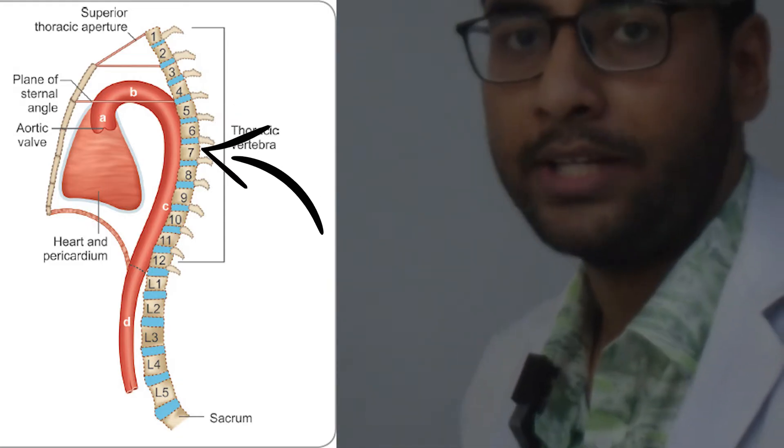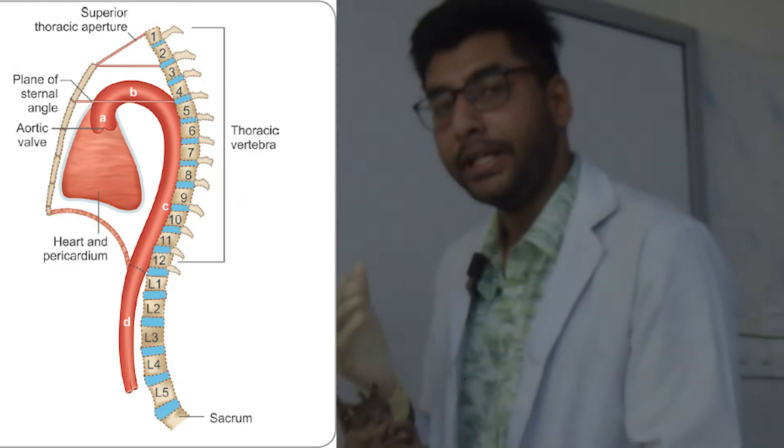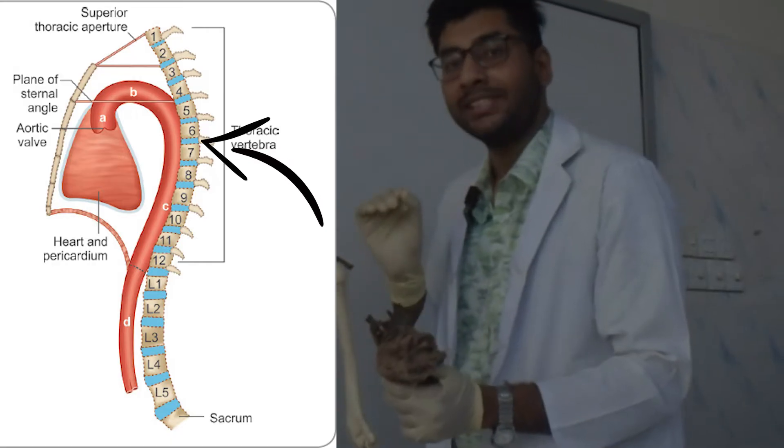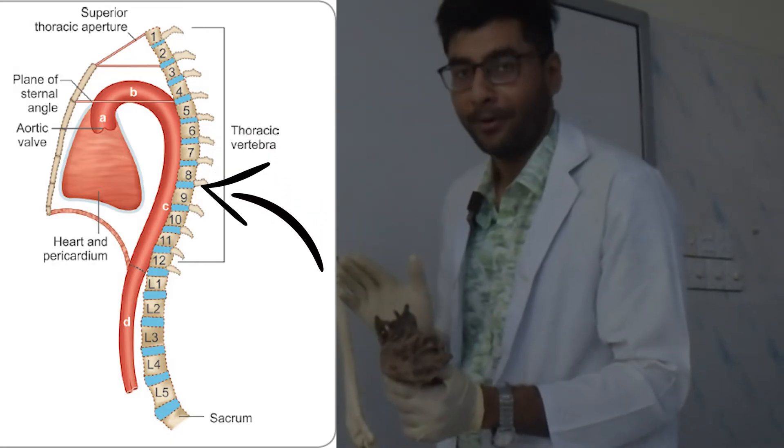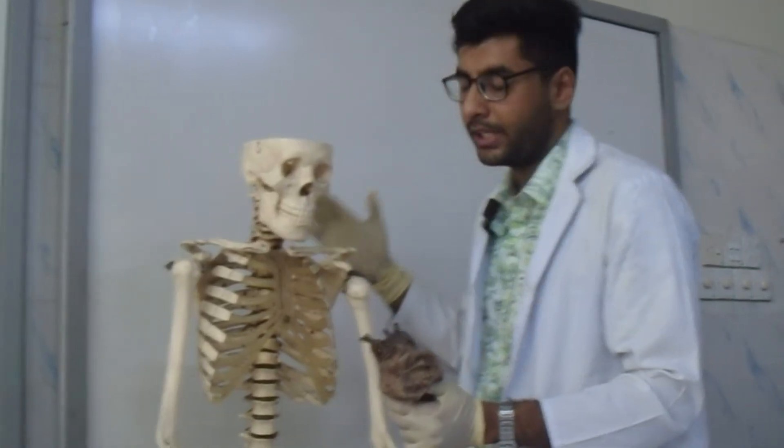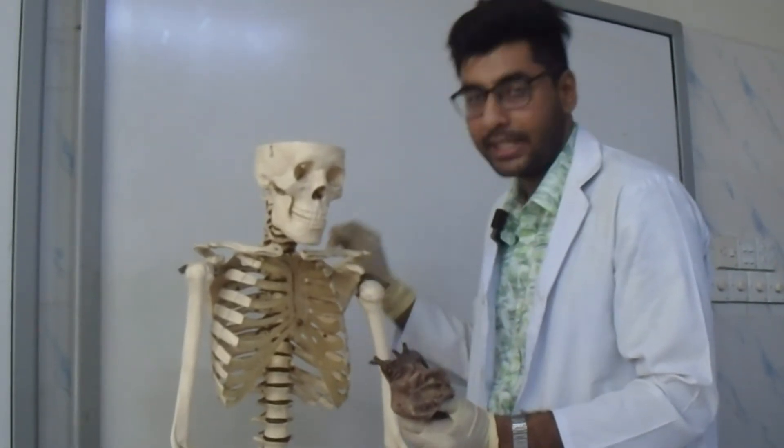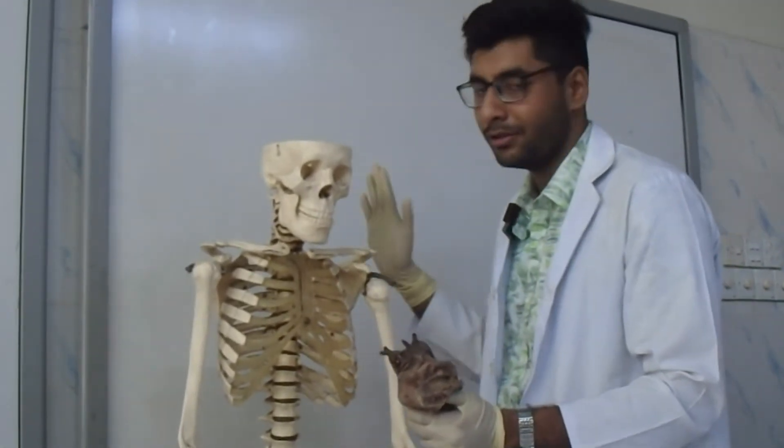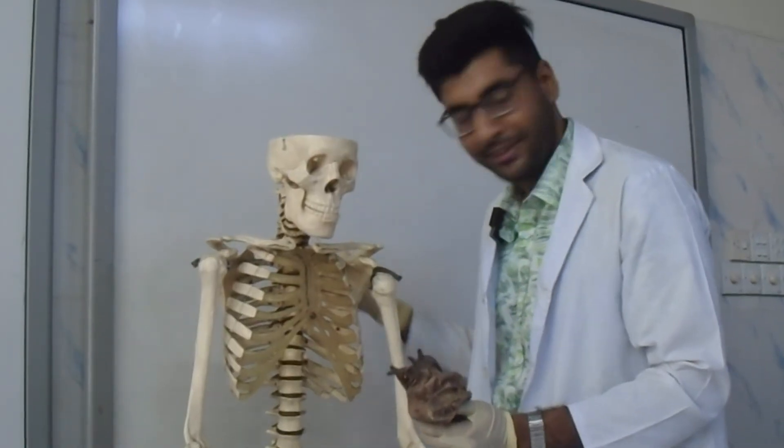is T5 to T8 vertebrae level, and in other postures it's T6 to T9 vertebrae level. Let's look at the skeleton to find T6 and T9.